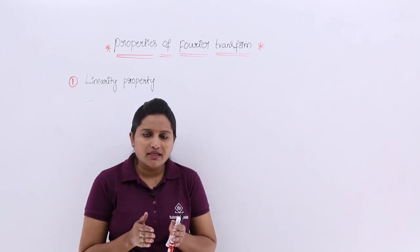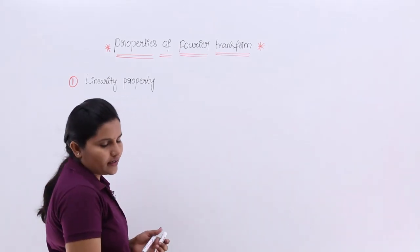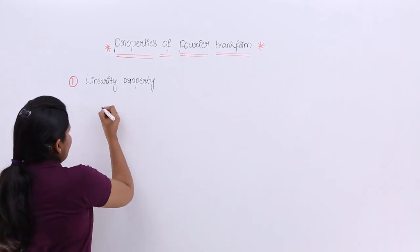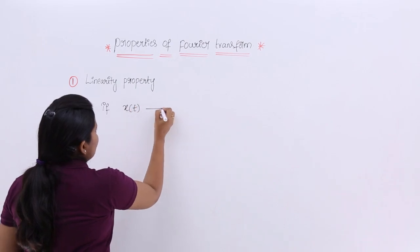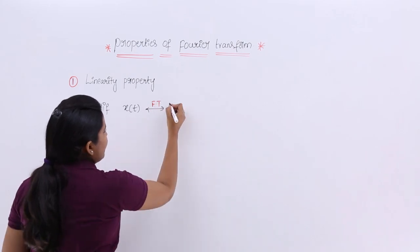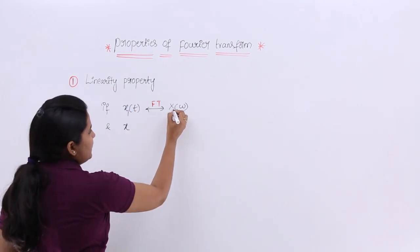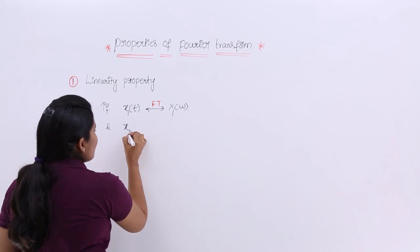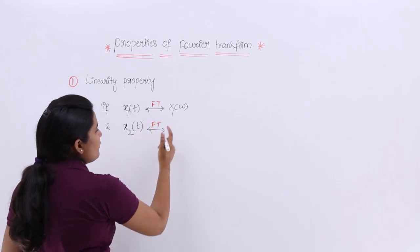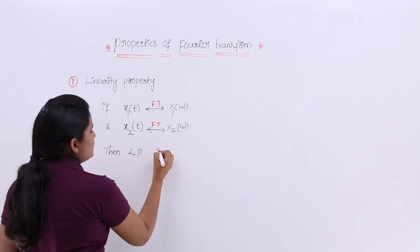Similar to that, if you are having any signal x1(t), for that if you are having a Fourier transform, this property states that if x1(t) is a signal, then the Fourier transform for this signal is X1(ω). If you are having another signal x2(t), the Fourier transform of that is X2(ω).